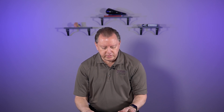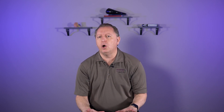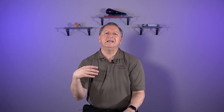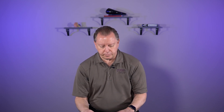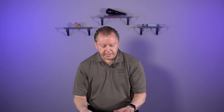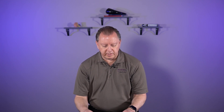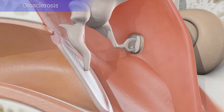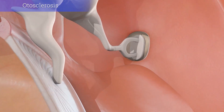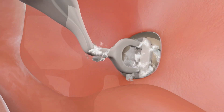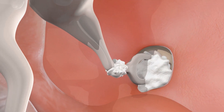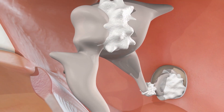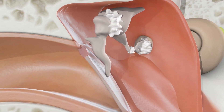Now let's move into what's called otosclerosis. Oto means ear; sclerosis is bone growth. When you see this, the ear is moving along just fine, but normally at the stapes — that little stirrup-shaped bone — or at other spots, there will be extra bone growth.